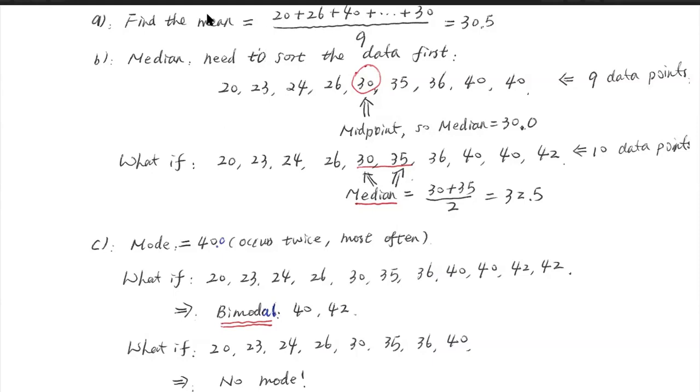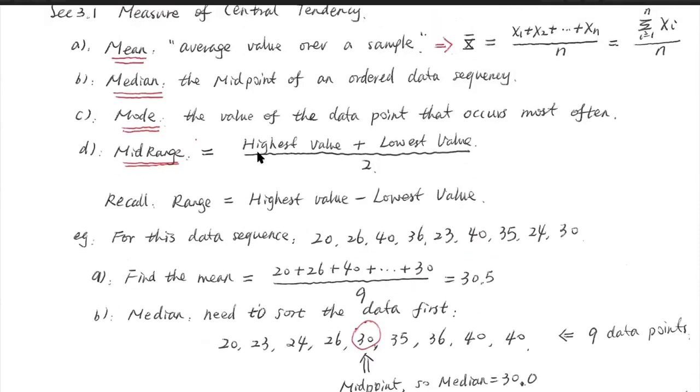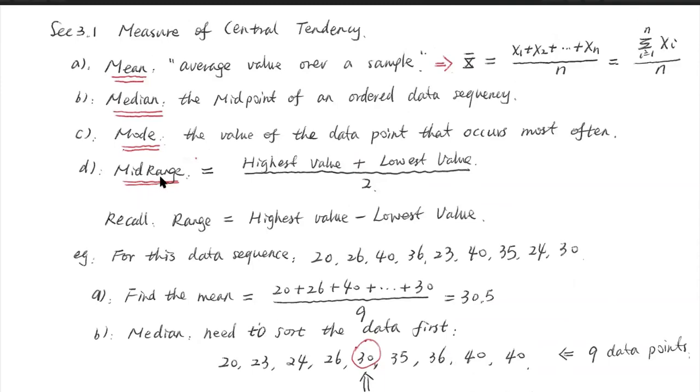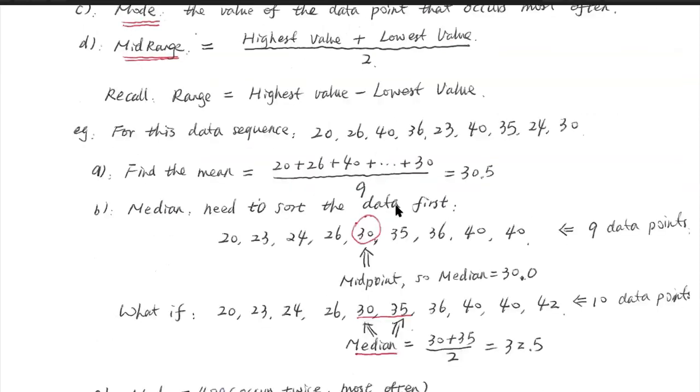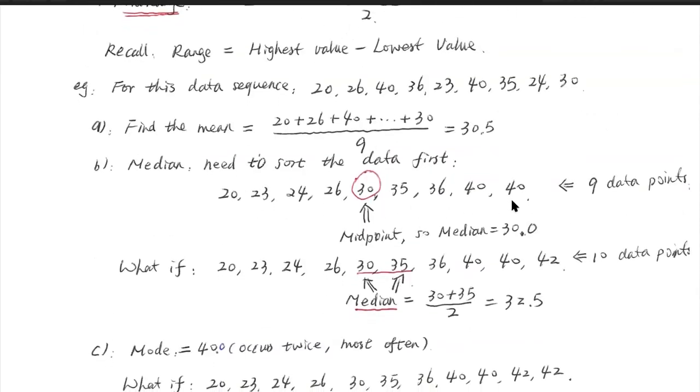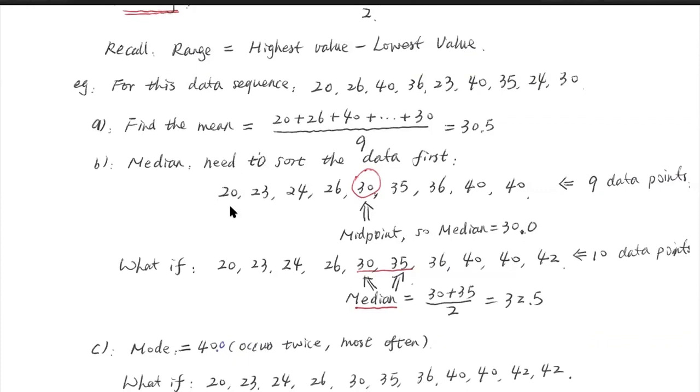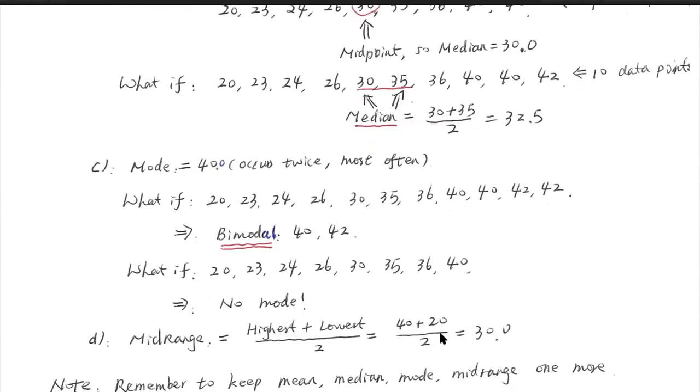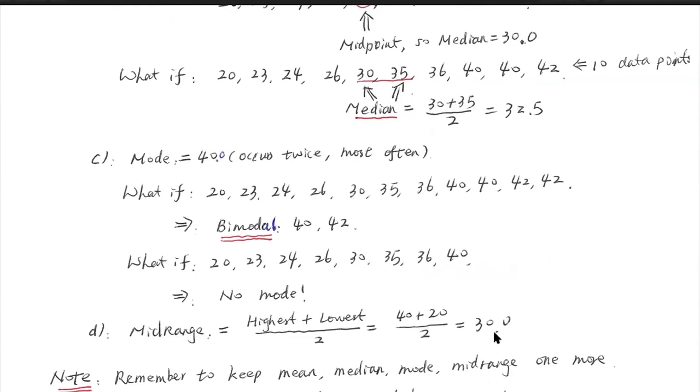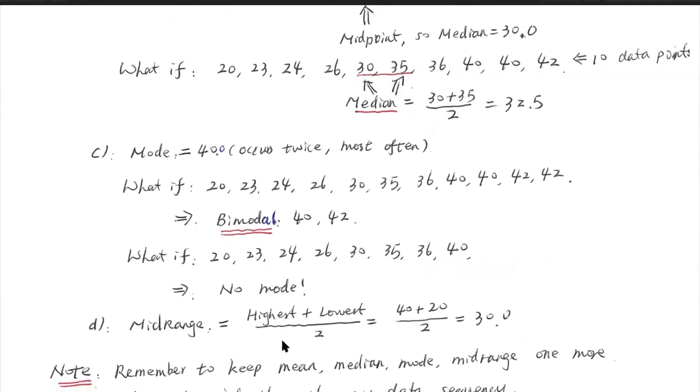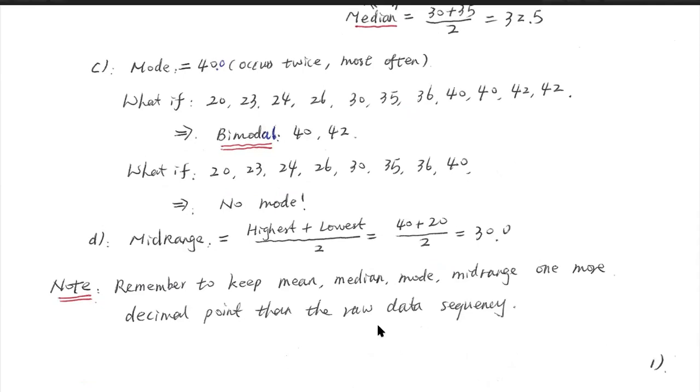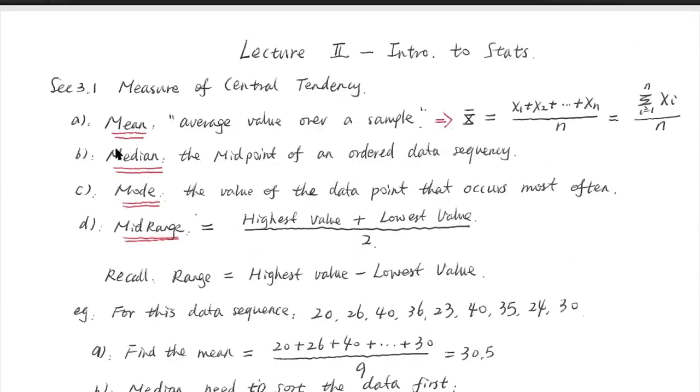All right. So that's for the mode case. How about the last one here? Midrange. By definition, midrange is considered as the highest value plus the lowest value divided by two. So after you put the number in order, you can easily see that you add the minimum one, you add the maximum one, divided by two, you got 30.0. So that's the midrange.